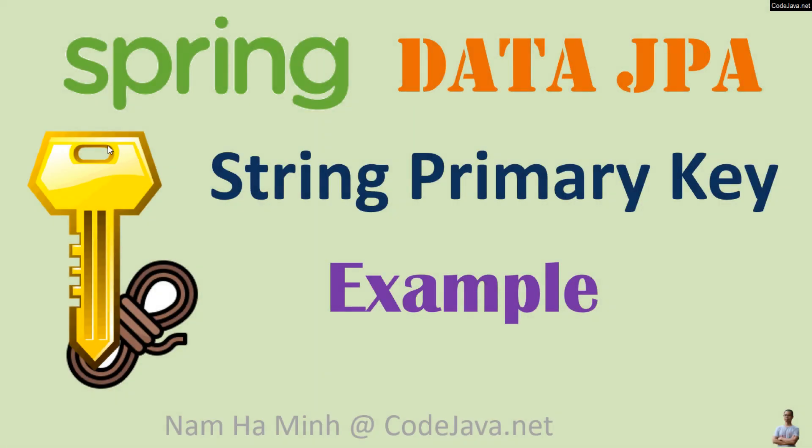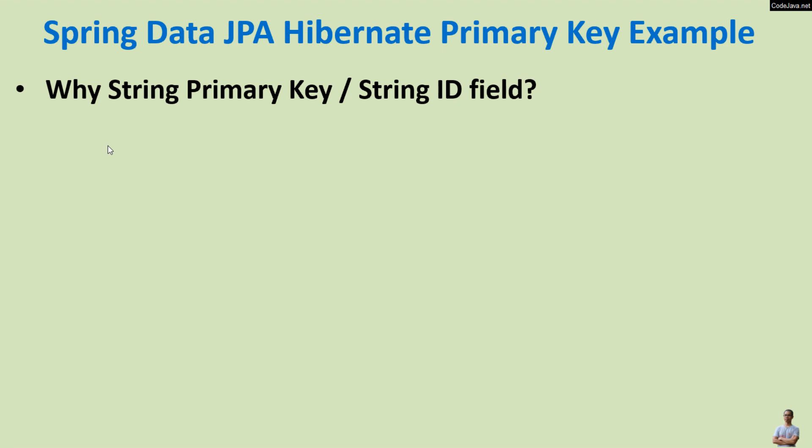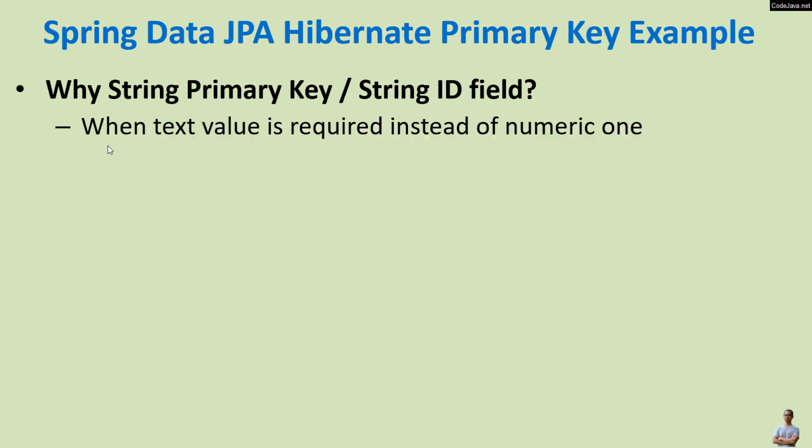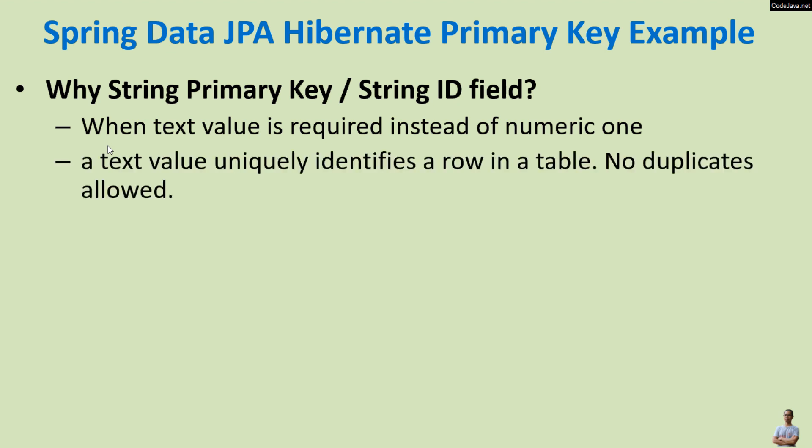Hello, in this video I'd like to share with you how to create and use a string primary key in Spring Data JPA and Hibernate. I am Nam Hamming from CodeJava.net. While using a string primary key in a database table, or using a string ID field in an entity class, we can use a string primary key when a text value is required instead of a numeric one, and the text value uniquely identifies a row in a table.